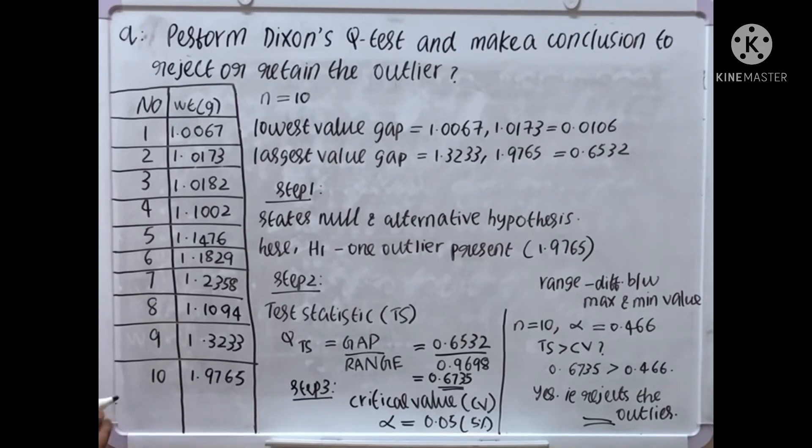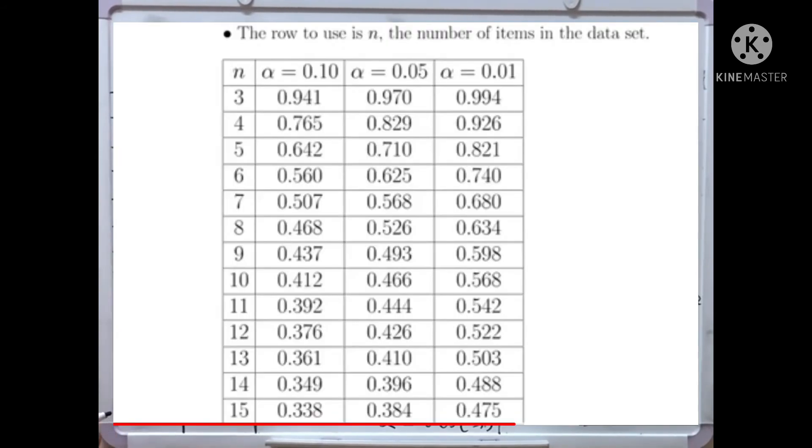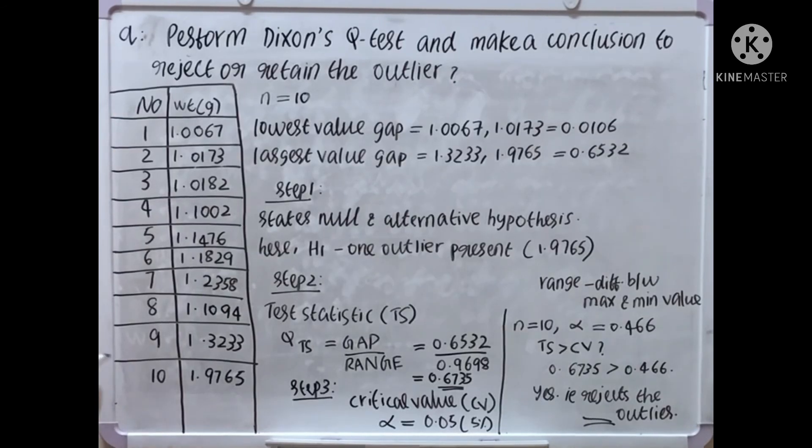Then we have to check if the TS greater than CV. Here TS equal to 0.6735, which is greater than the CV value, right? CV equal to 0.466. 0.6735 greater than 0.466, that is TS greater than CV.